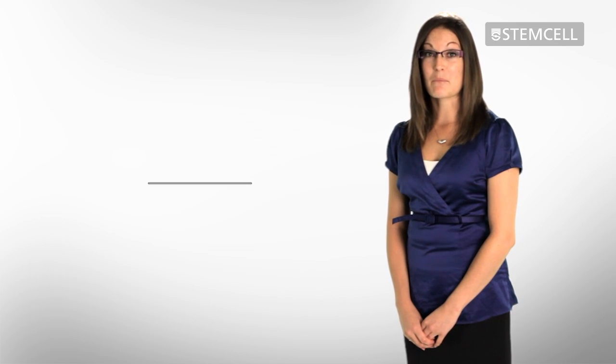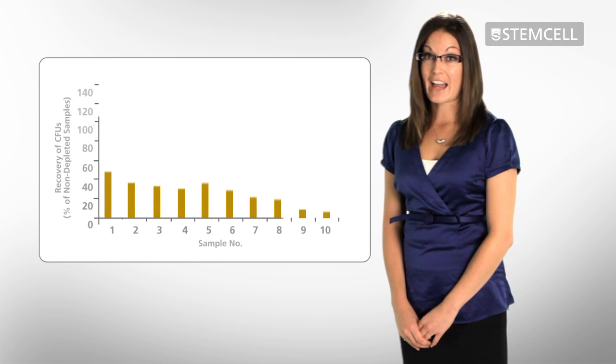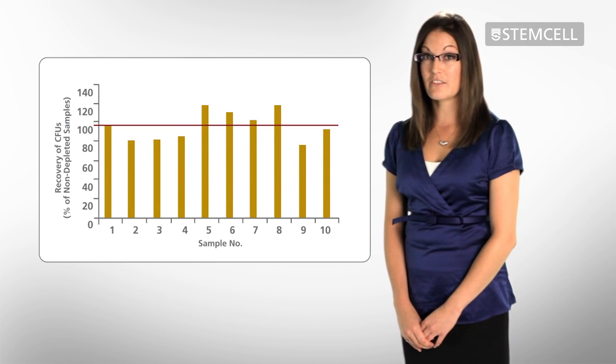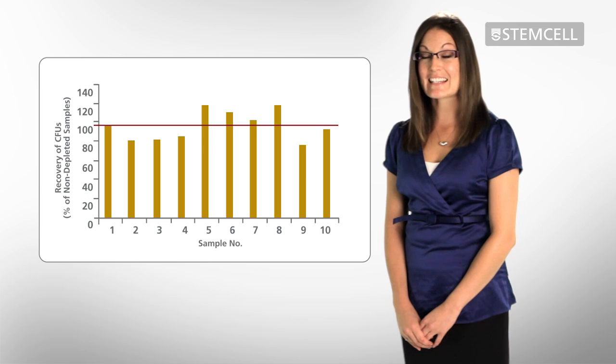Using HetaSep does not result in a significant loss of hematopoietic progenitor cells. In fact, the average recovery of CFUs in HetaSep-cleared samples is 97% compared to uncleared samples.